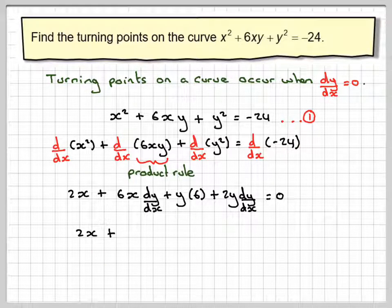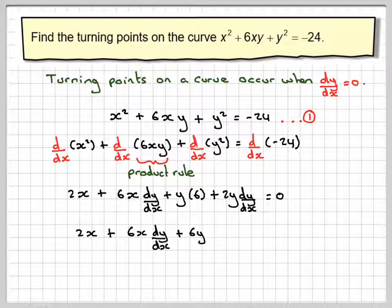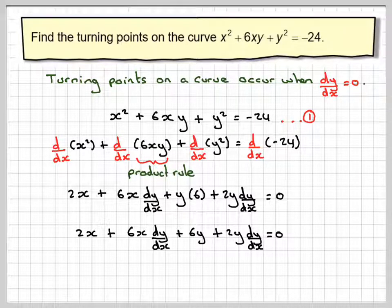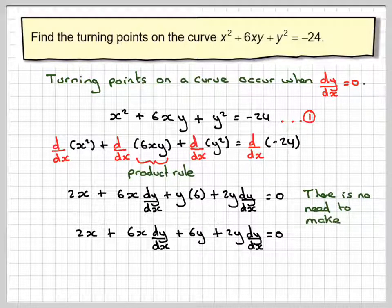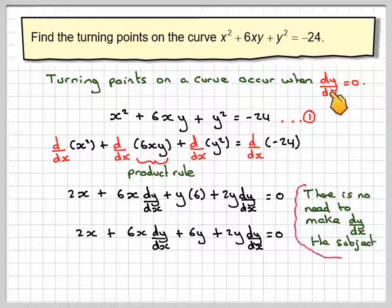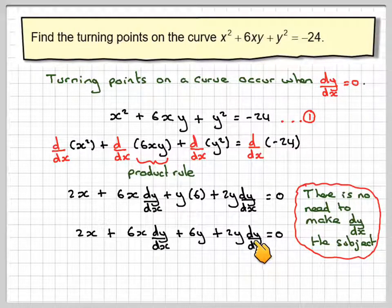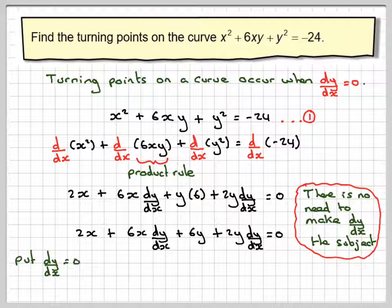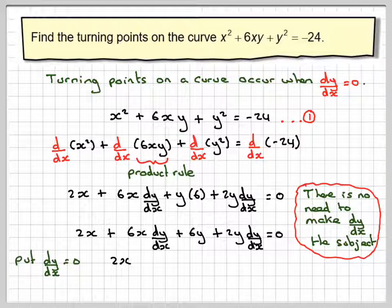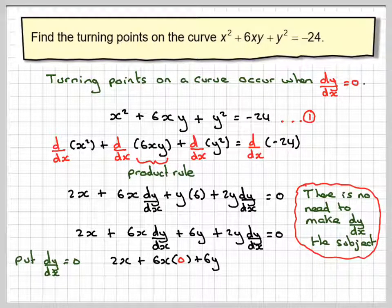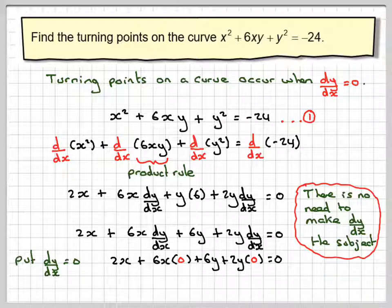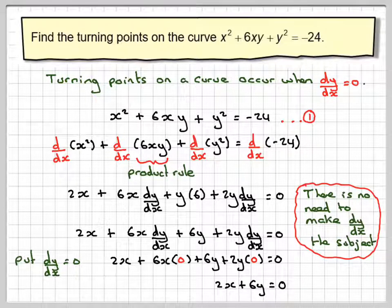That gives me 2x plus 6x dy by dx plus 6y plus 2y dy by dx is equal to 0. Now, because we're finding stationary points, we don't really need to make dy by dx the subject. What we know is that turning points occur when dy by dx is equal to 0. So we'll put this one equal to 0 and this one equal to 0. So we're going to have 2x plus 6x times 0 plus 6y plus 2y times 0 is equal to 0. So that's just going to give us 2x plus 6y is equal to 0.